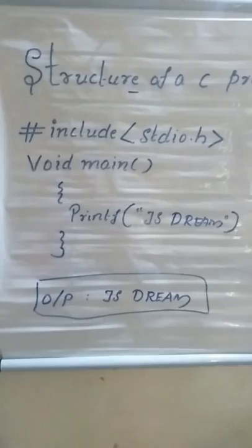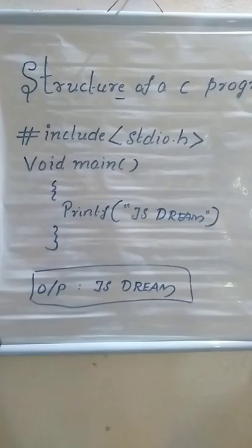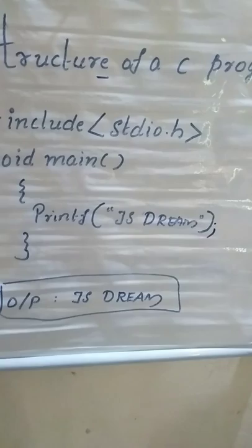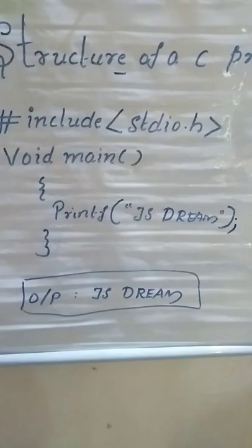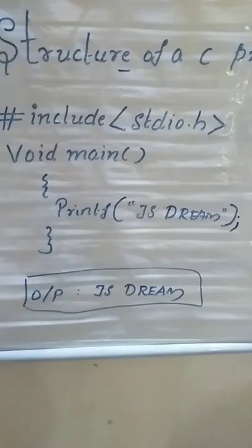When we use the void main function, the main function executes the program. The main function contains printf("jsdream"). The word is jsdream and the output is jsdream. Please like and subscribe. Thank you so much.